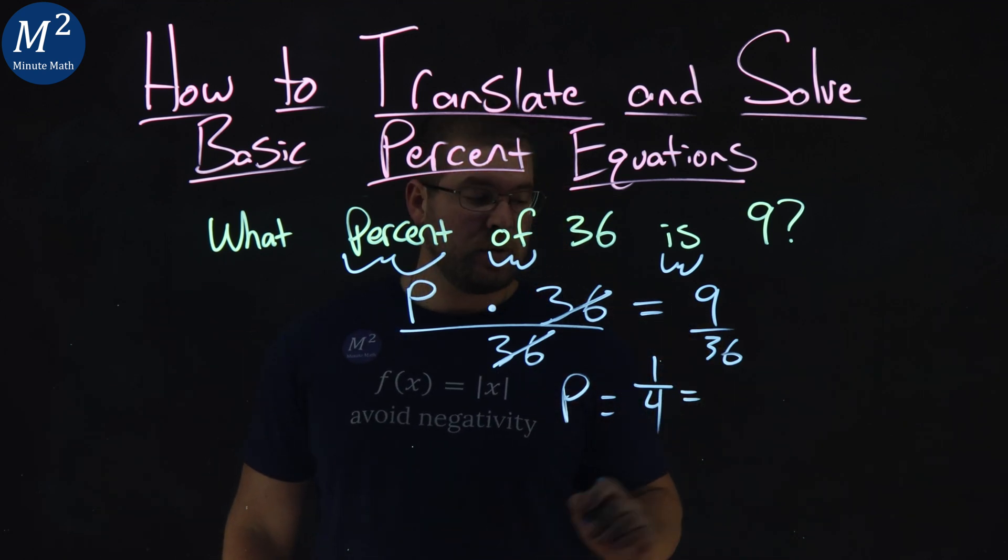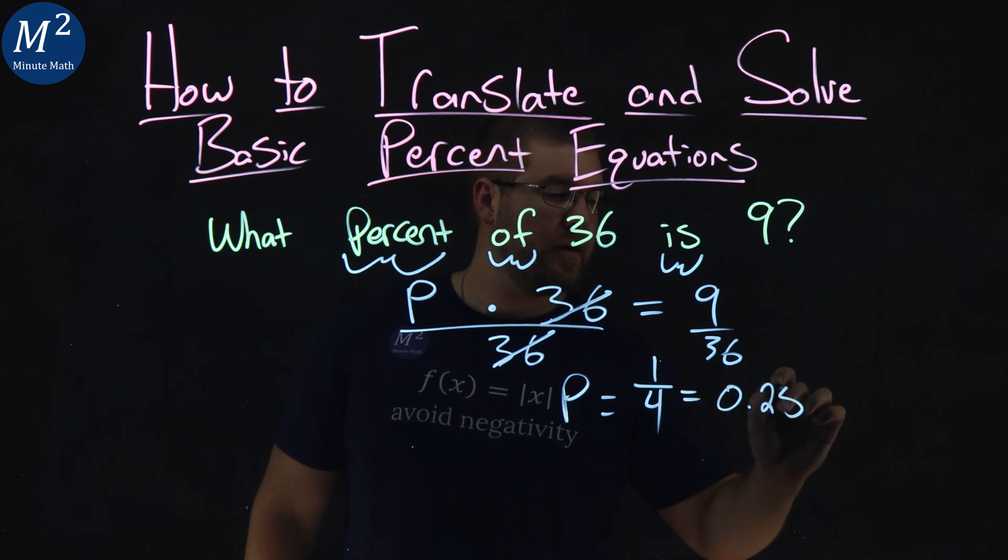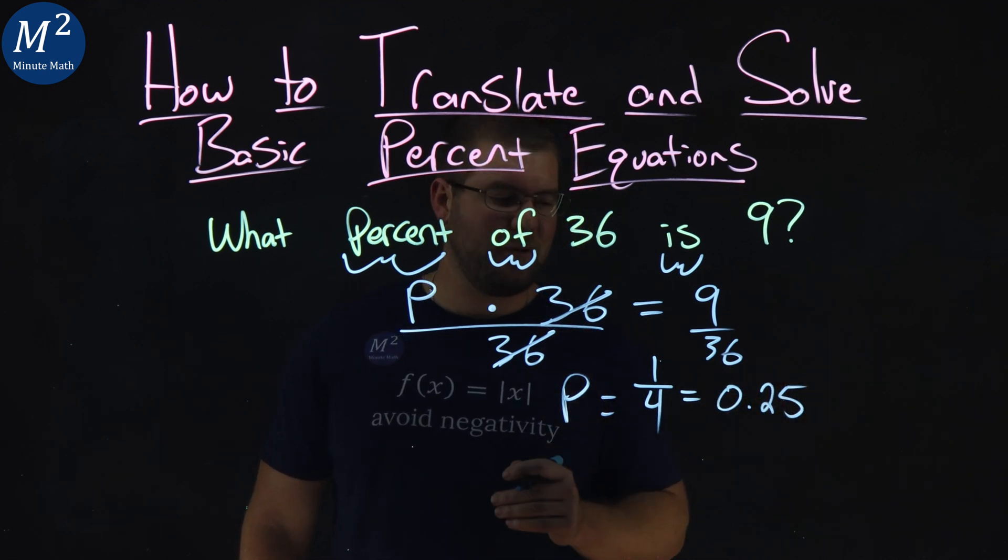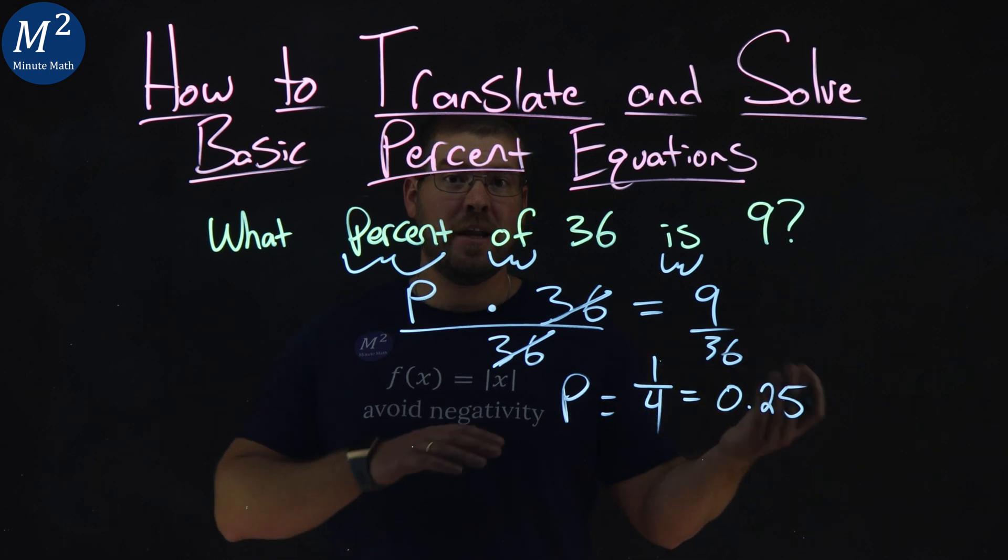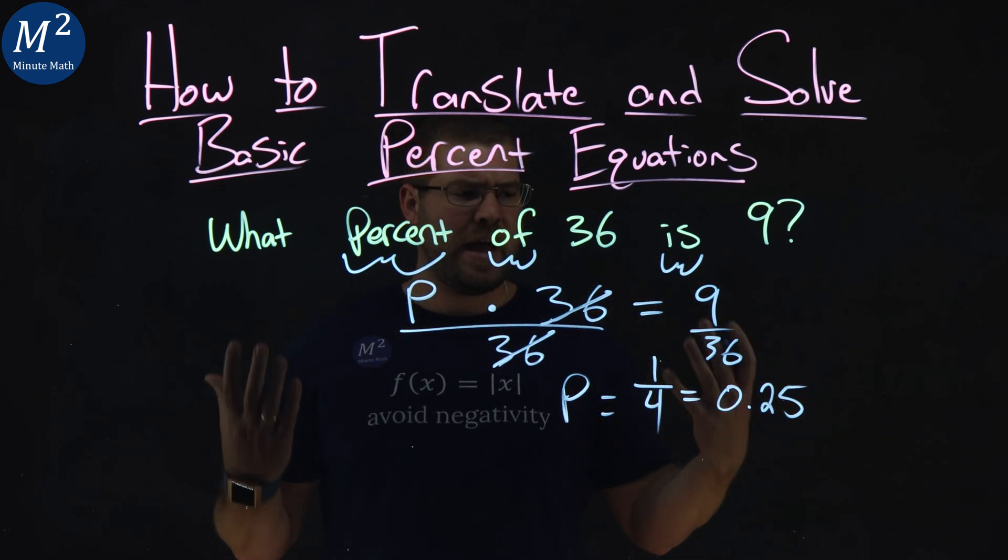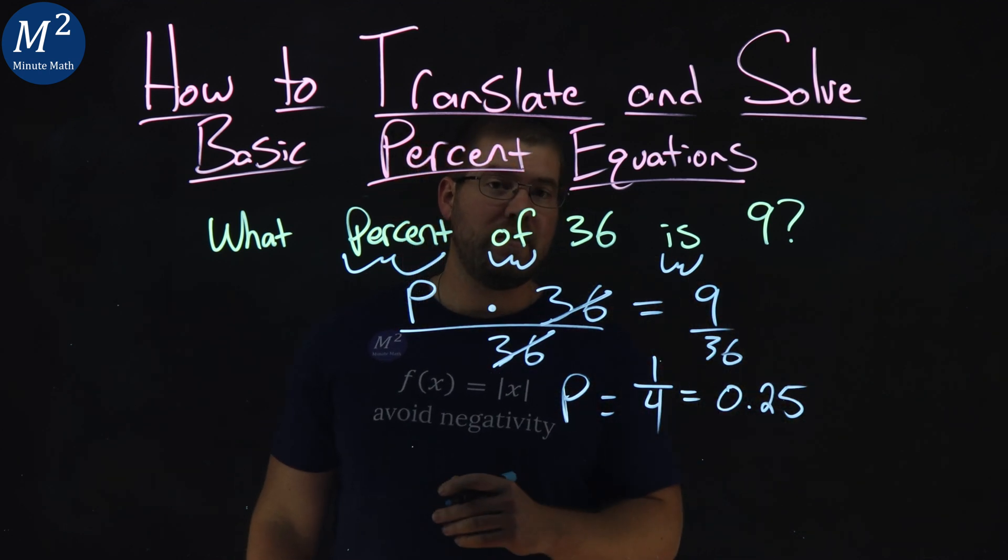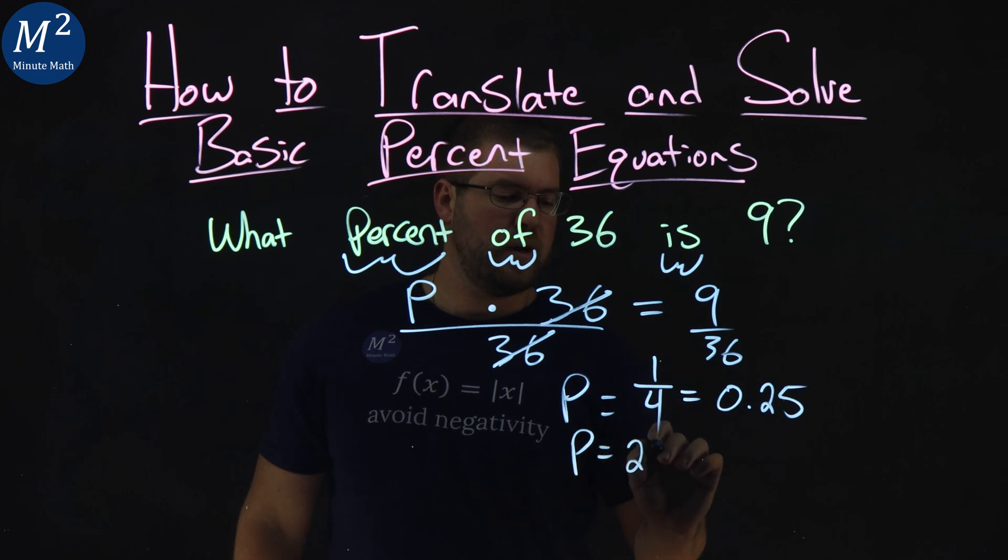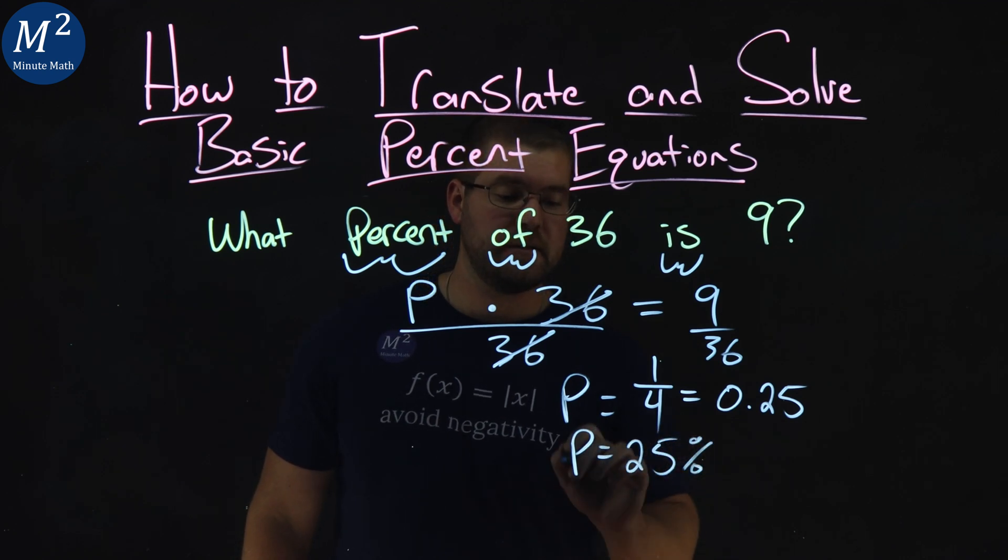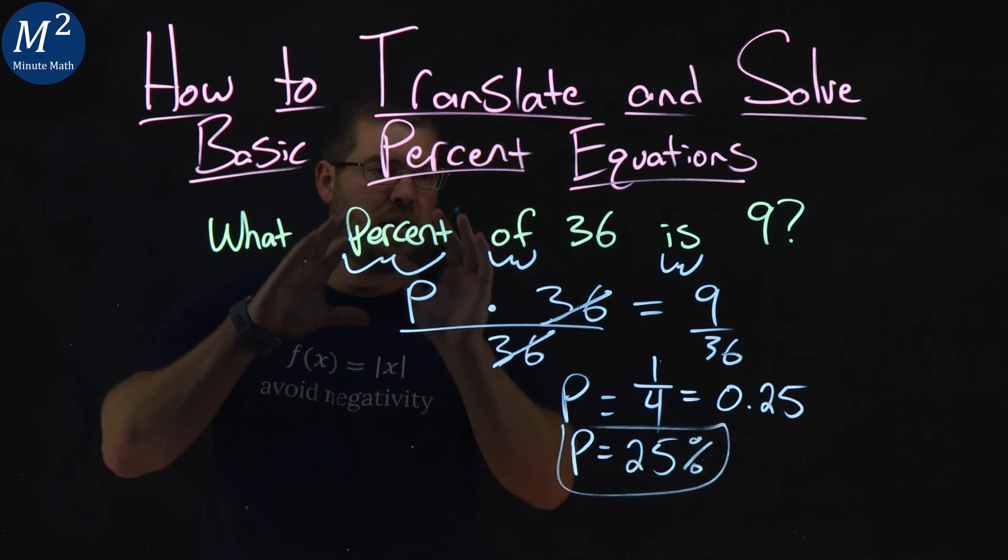One-fourth as a decimal is 0.25. Hopefully you know that. And then from there, we need to write that as a percent, because that's what they're asking us.